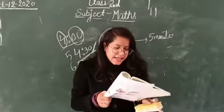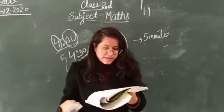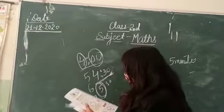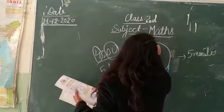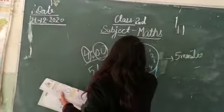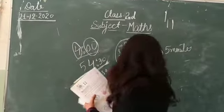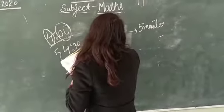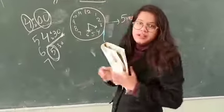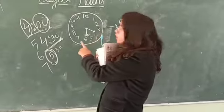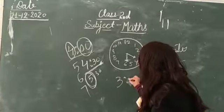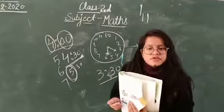Now see exercise 11.1, question number 1: Write the time shown in the clocks below. The shorter hand is on 4, the shorter hand is on 6, and the shorter hand is on 3.